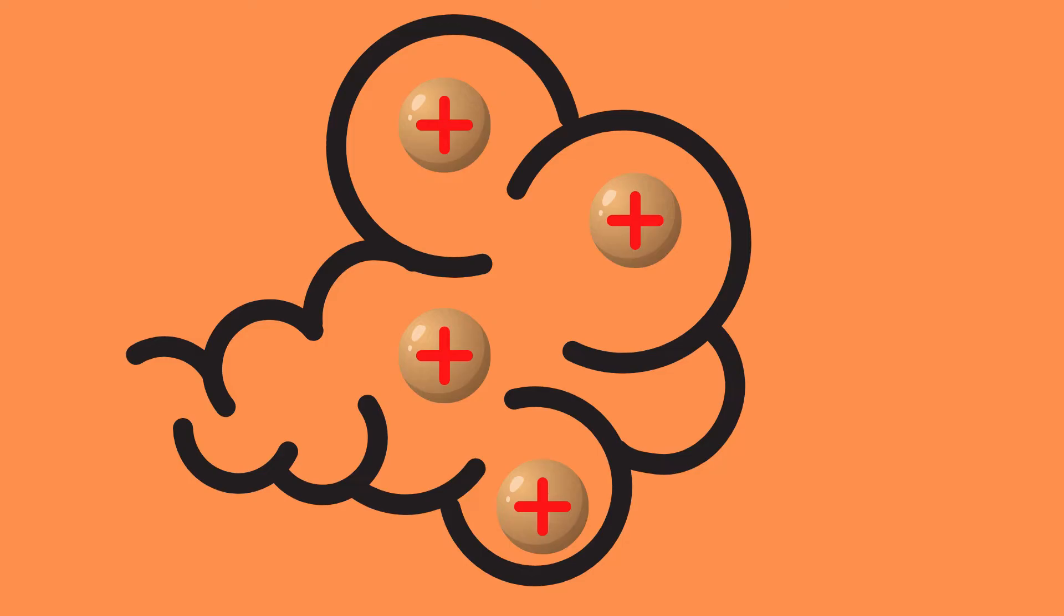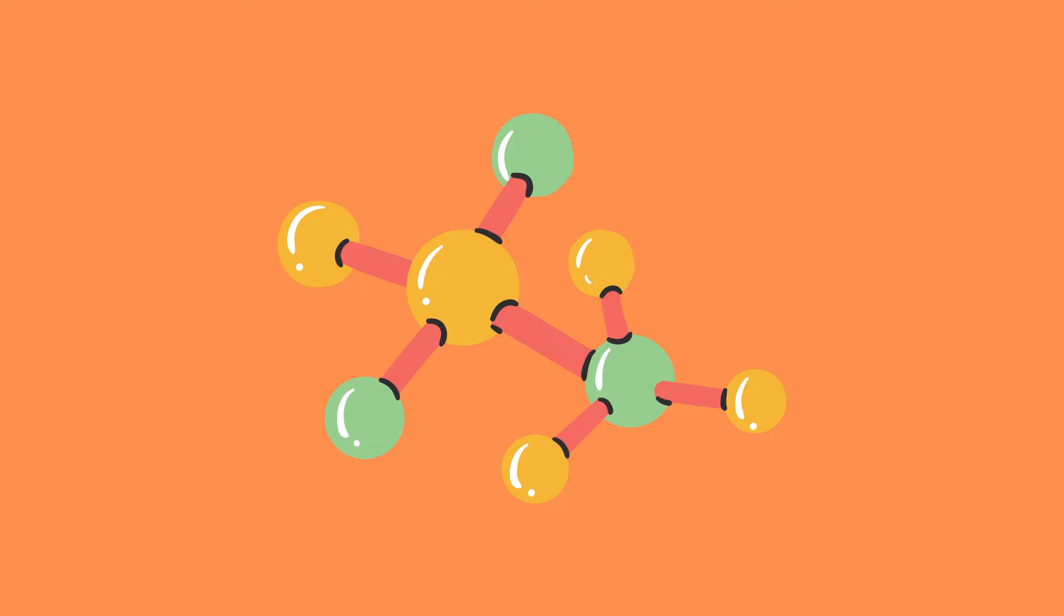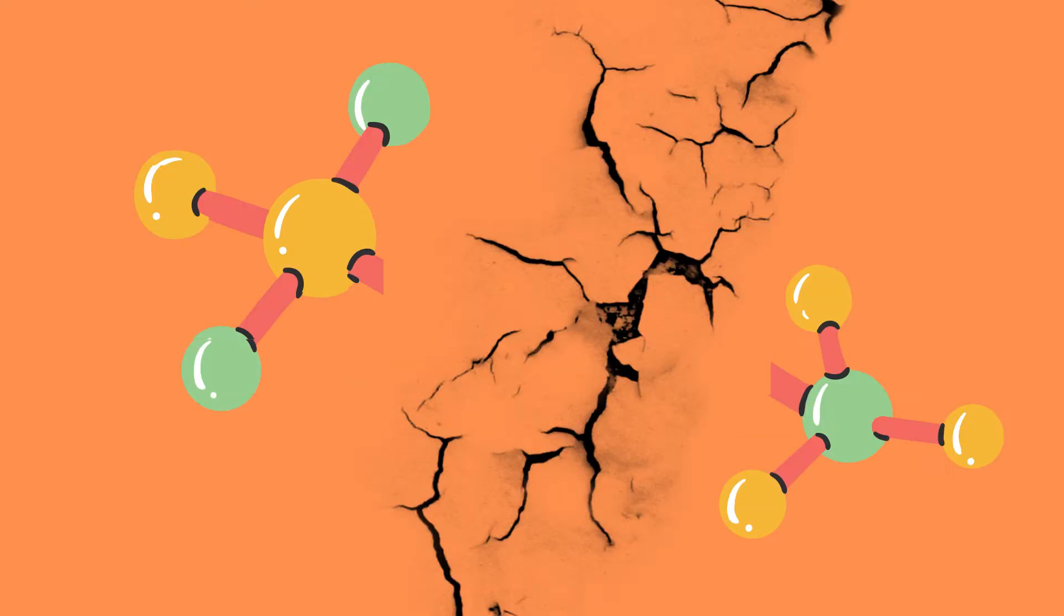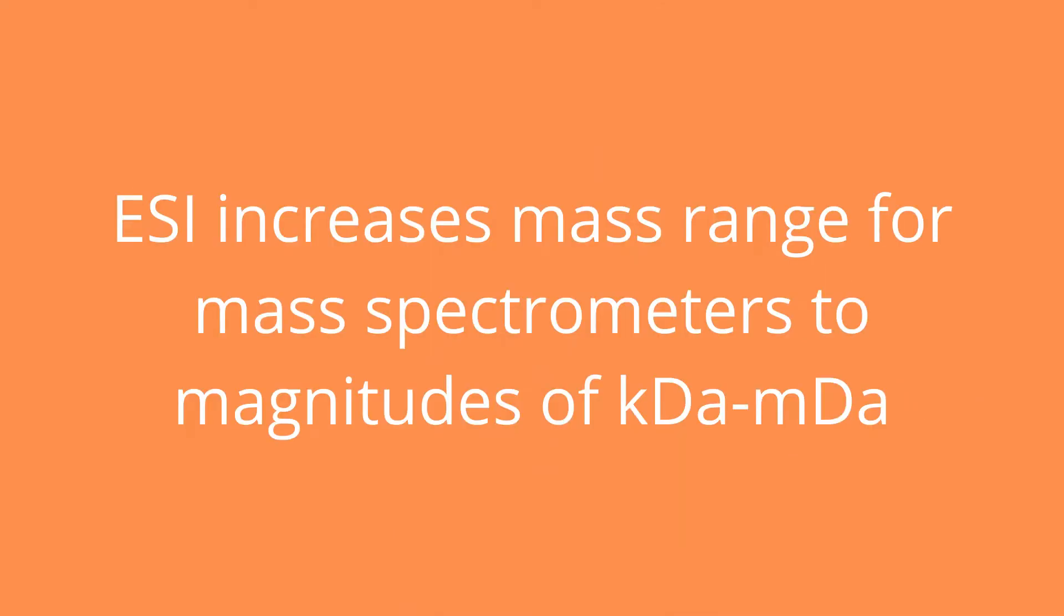Normally ionizing biomolecules is difficult due to their fragile nature. Electrospray ionization can successfully bypass this, effectively increasing the mass range of, for instance, the mass spectrometer by magnitudes up to kilodaltons or even megadaltons.